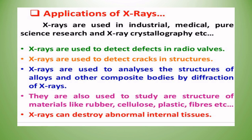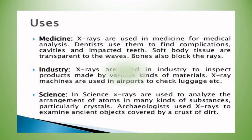X-rays can destroy abnormal internal tissues. In medicine, X-rays are used for medical analysis — dentists use them to find complications, cavities, and impacted teeth. Soft body tissues are transparent to the waves while bones block them. In industry, X-rays are used to inspect products made from various materials, and X-ray machines are used in airports to check luggage.